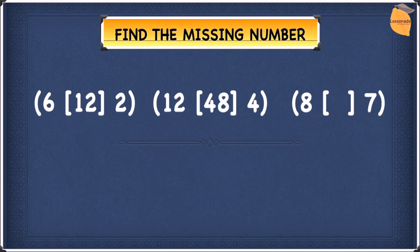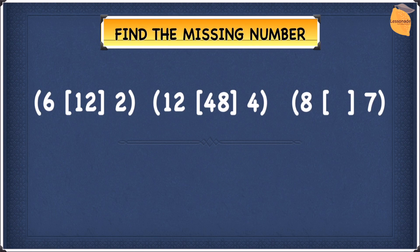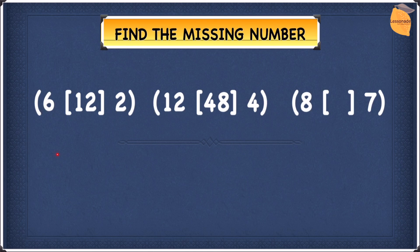Let's get started. The trick with these questions is to look at the middle number. If the middle number is larger than the two outside numbers, then the question has something to do with addition or multiplication. If the middle number, however, is smaller than the two outside numbers, then the question has something to do with subtraction or division. In our case, the middle number is larger than the two outside numbers, so we'll have to do either addition or multiplication.